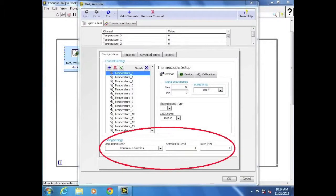From here, ensure that the acquisition mode is set to continuous samples, samples to read is set to 1, and rate is set to 1.